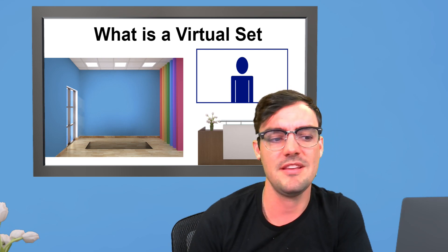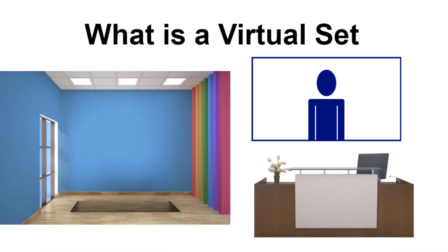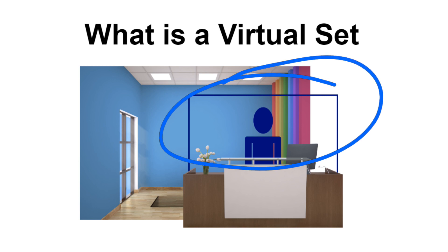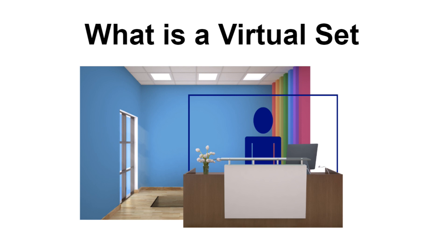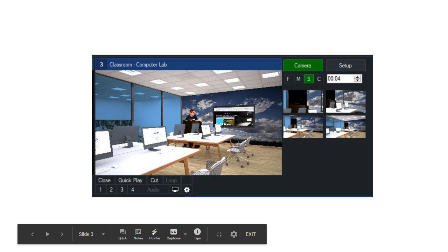A virtual set is the combination where you're basically sandwiching yourself in between a background and a foreground — that is what a virtual set is. If you break that down, you can create your own custom background, your own custom foreground, and then put yourself with the green screen chroma key together.